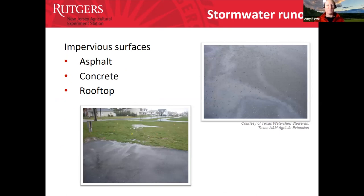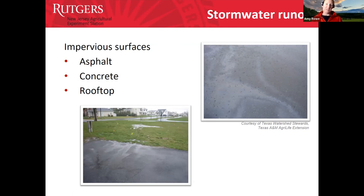Stormwater runoff is what happens when precipitation hits an impervious surface — anything that does not allow water to move through it, like asphalt, concrete, or rooftops. Even a grass field can be considered impervious if it is compacted. On your farm, you want pervious surfaces that allow water to flow through and infiltrate down into the soil for your plants.